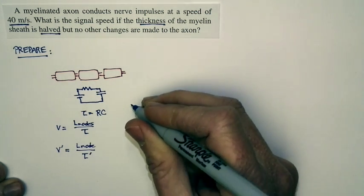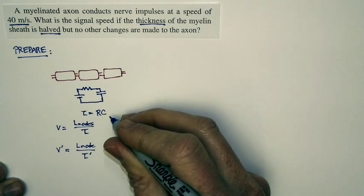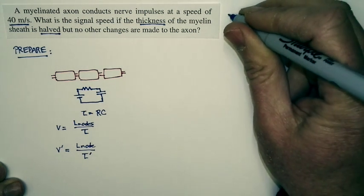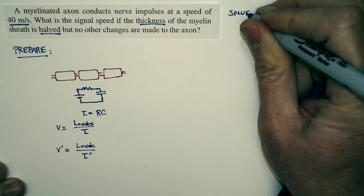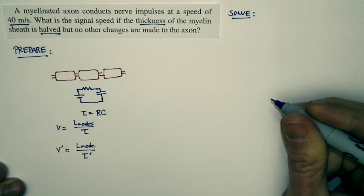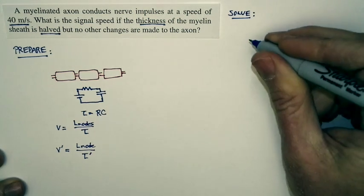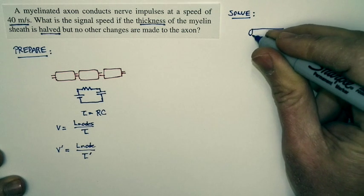How does the time constant change? Well, the time constant is equal to R times C. We need to solve for how that time constant changes. Now remember, when we're looking at the resistance,